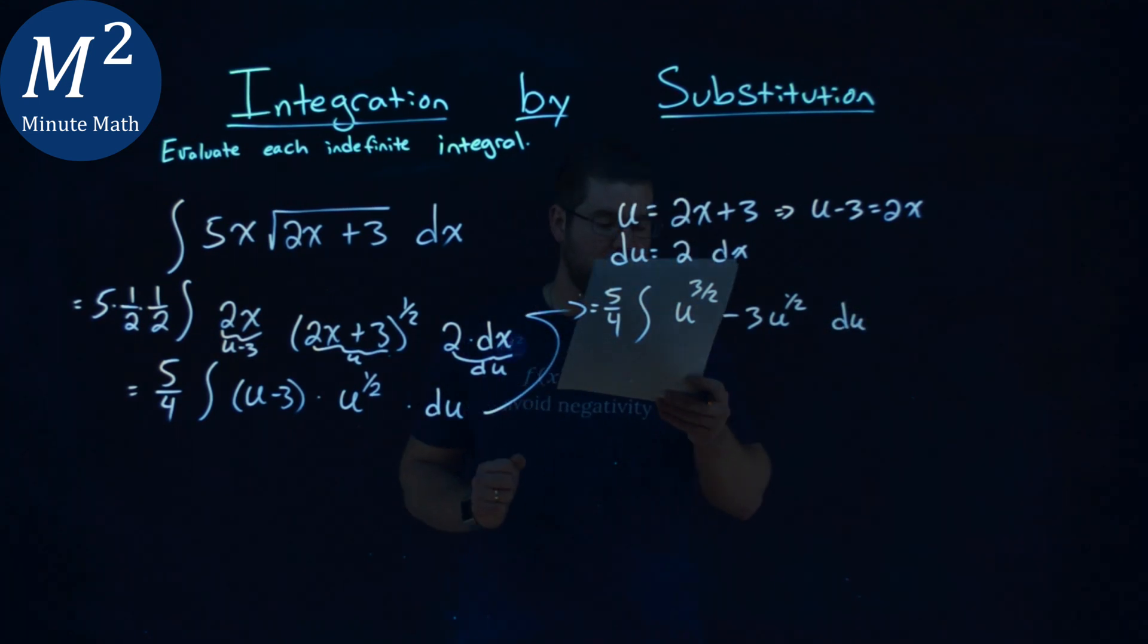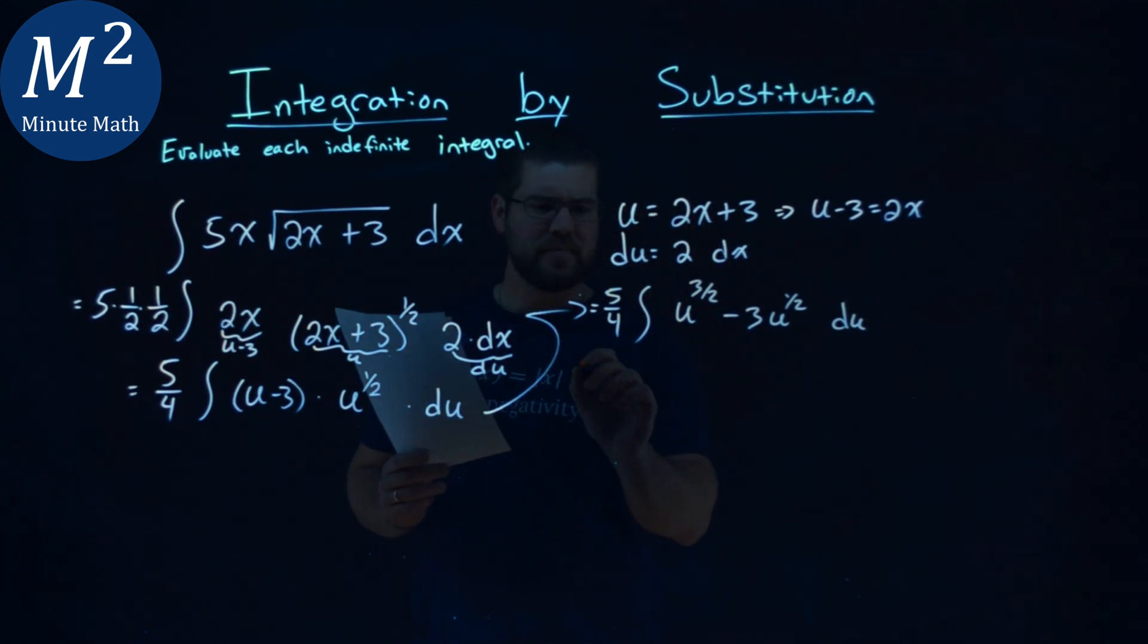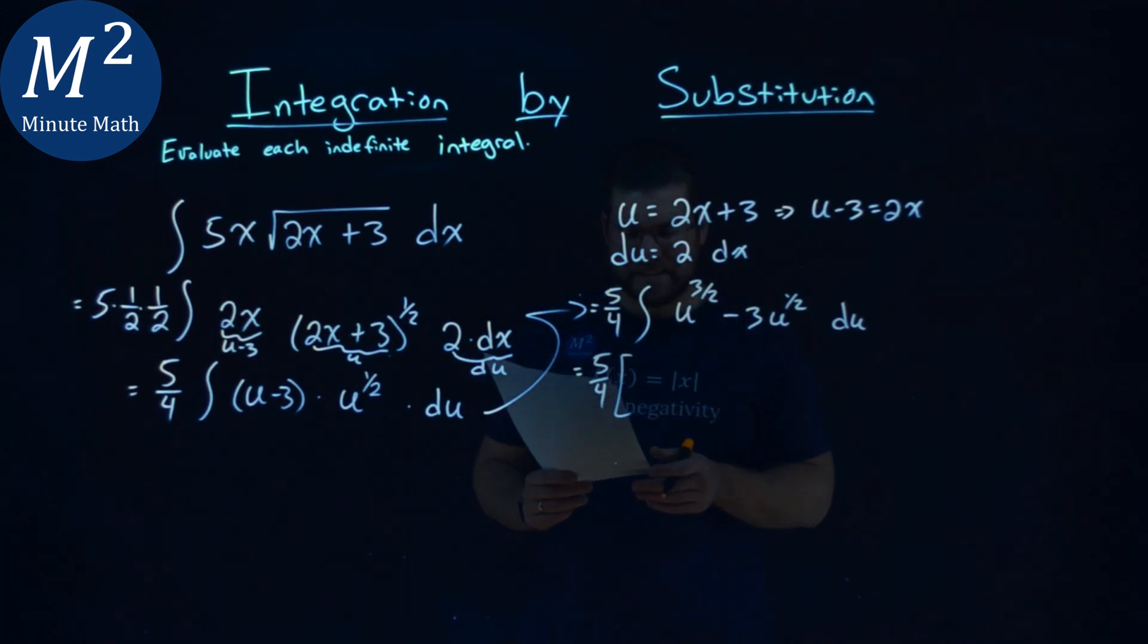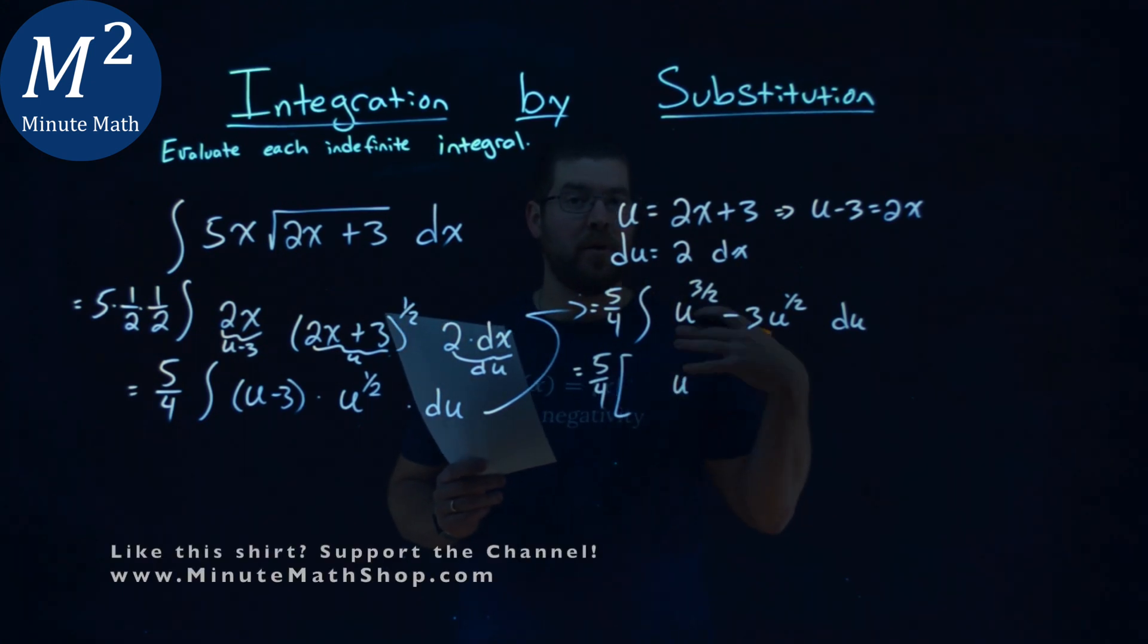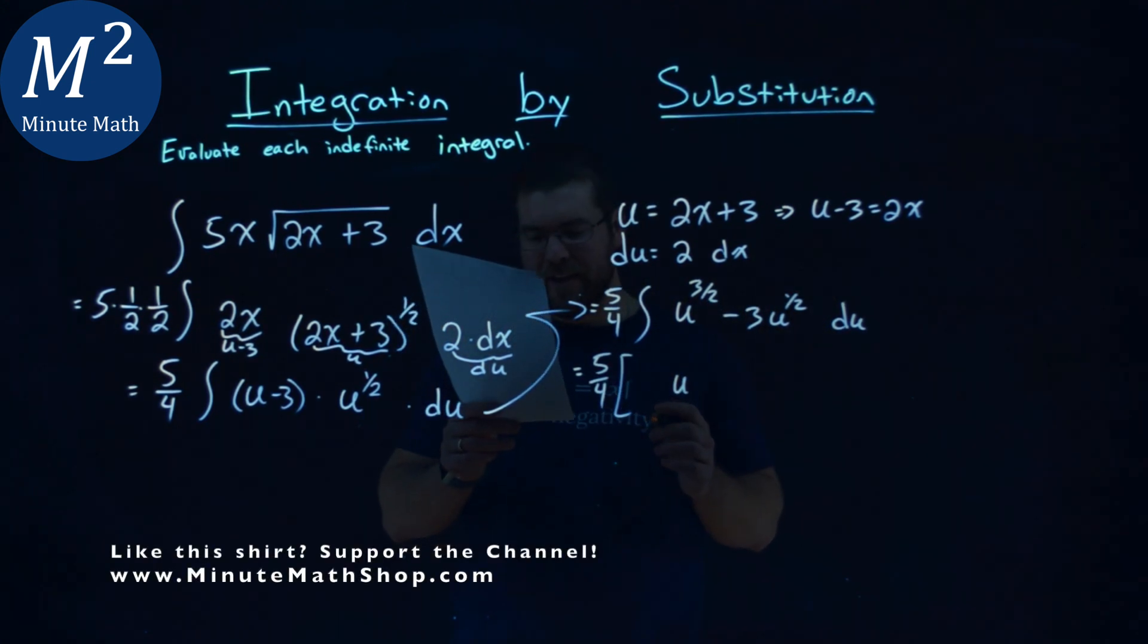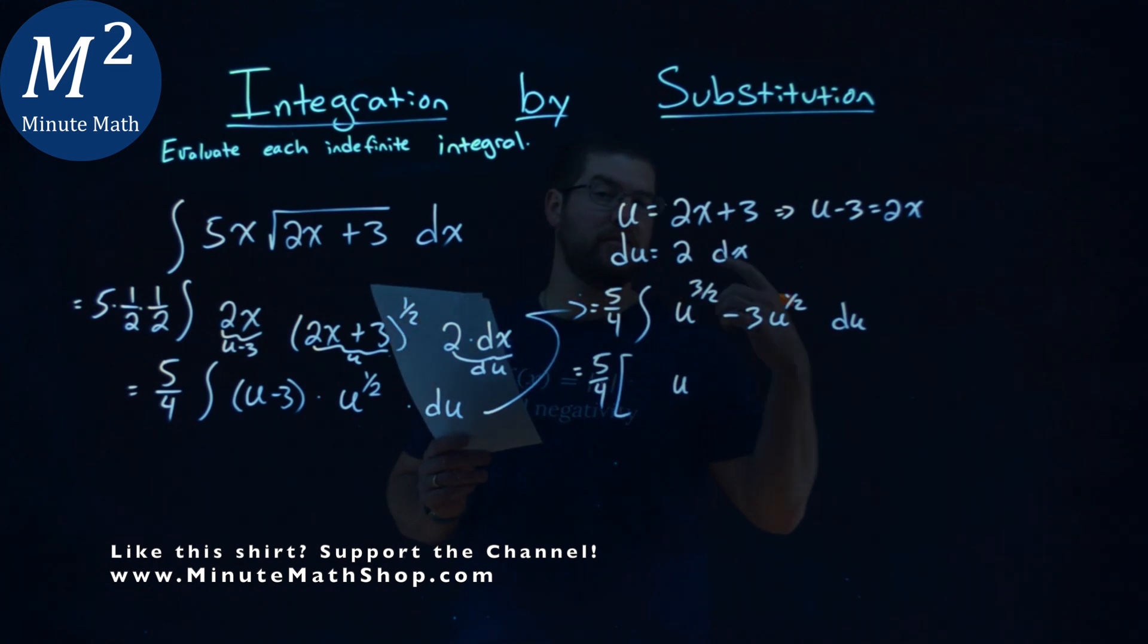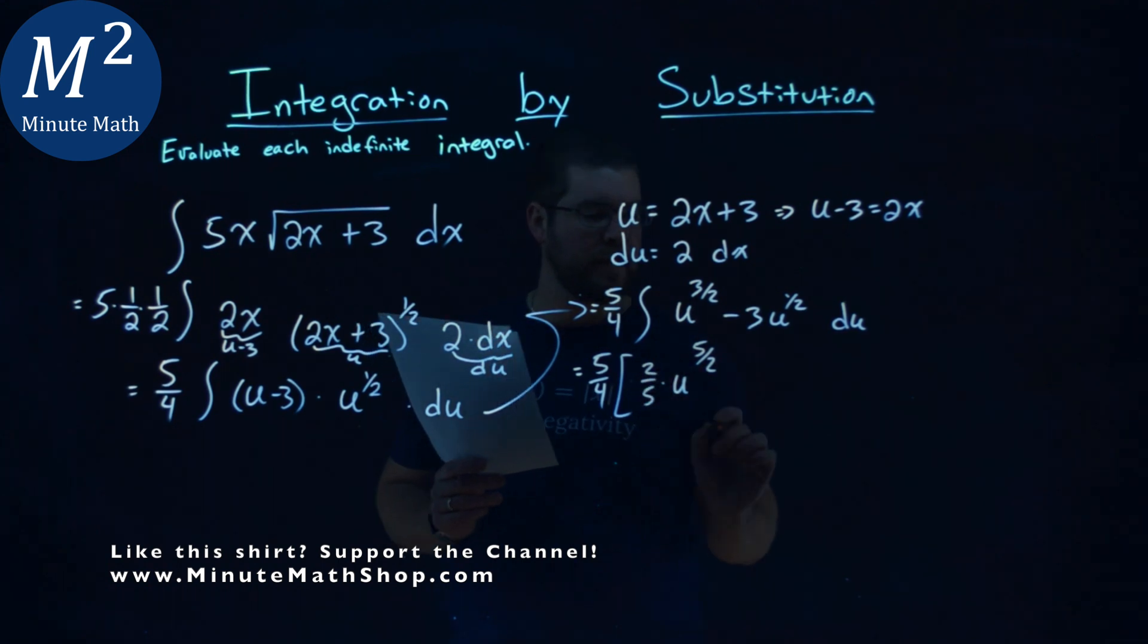Just making sure I solved it that right. We're good. So now from here, 5 fourths stays out front. Let's take the integral of the inside here. Power rule. U, we raise the exponent by 1. We add 1 to it. So we have a 5 halves. 3 halves plus 2 over 2 is the 5 halves. Cancel it out, multiply by 2 fifths up front.